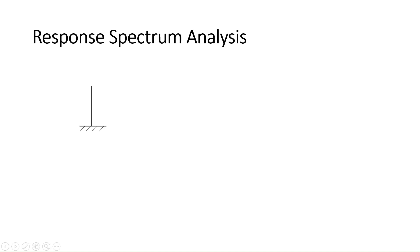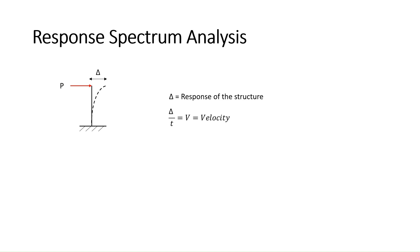Let's review a structure which is subjected to a lateral load P due to earthquake. Now due to this lateral load, the structure will get displaced by amount delta. This displacement generated in the structure due to lateral load is called the response of the structure. If this displacement varies with time, it gives us velocity, and if velocity varies with time, it gives us acceleration. So when a structure is subjected to any lateral load, it will produce three kinds of responses: displacement, velocity, and acceleration. The assessment of all these three is done in response spectrum analysis.